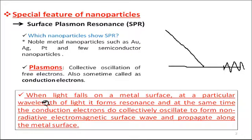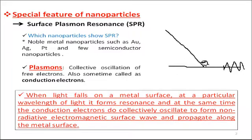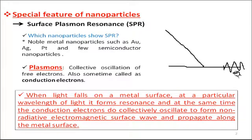When light falls on a metal surface at a particular wavelength, it forms resonance and the conduction electrons collectively oscillate to form a non-radiative electromagnetic surface wave and propagate along the metal surface. This propagation of the electronic wave occurs at the interface between the metal surface and the surrounding — which could be normal air or any dielectric medium. This electronic oscillation is responsible for light absorption, and this absorption phenomenon is known as surface plasmon resonance.